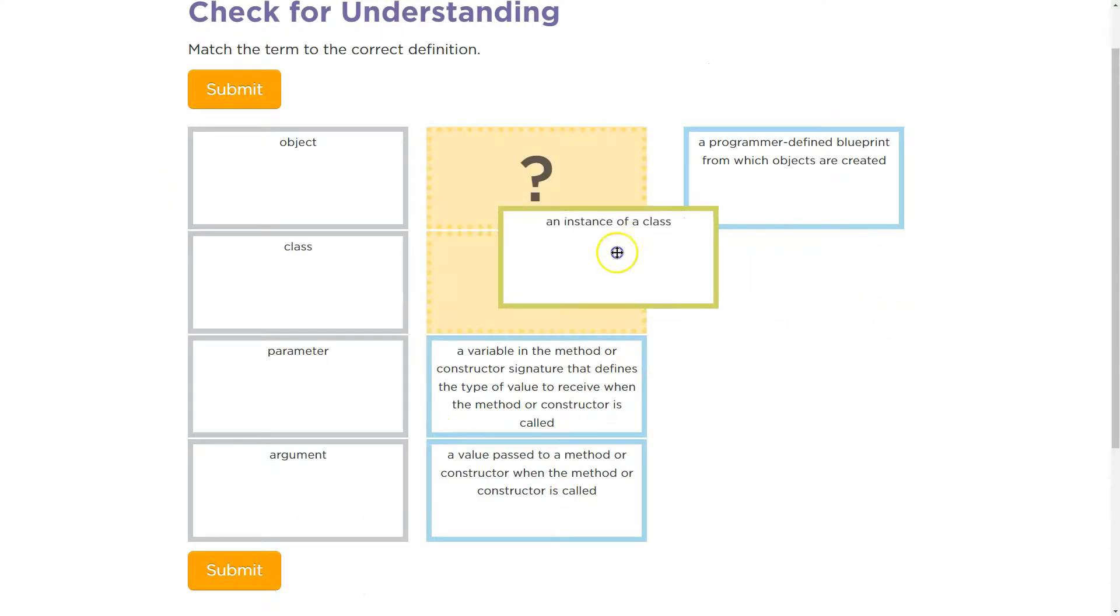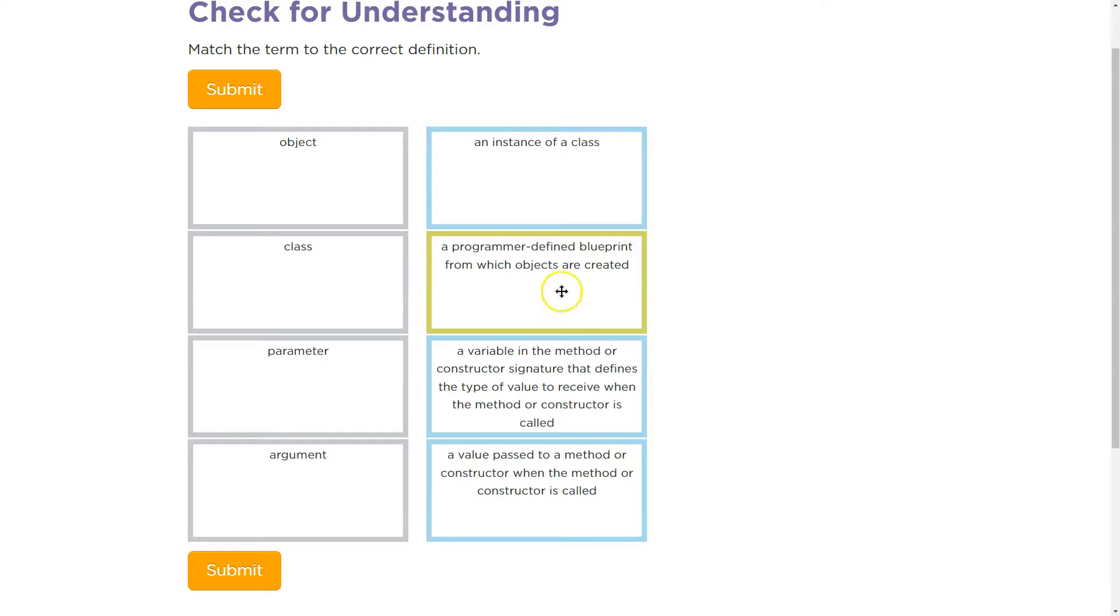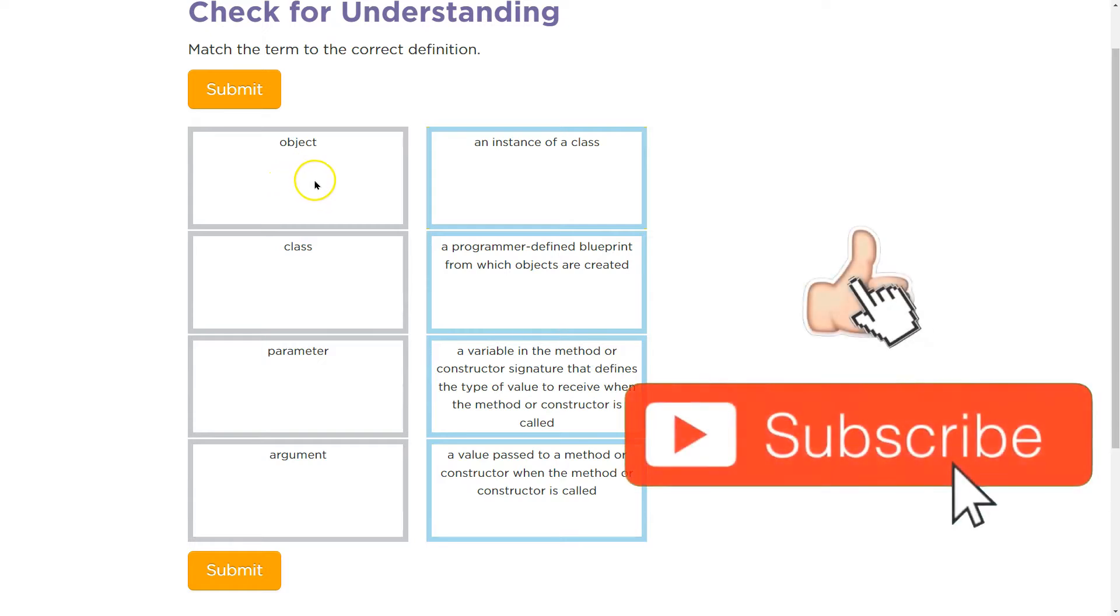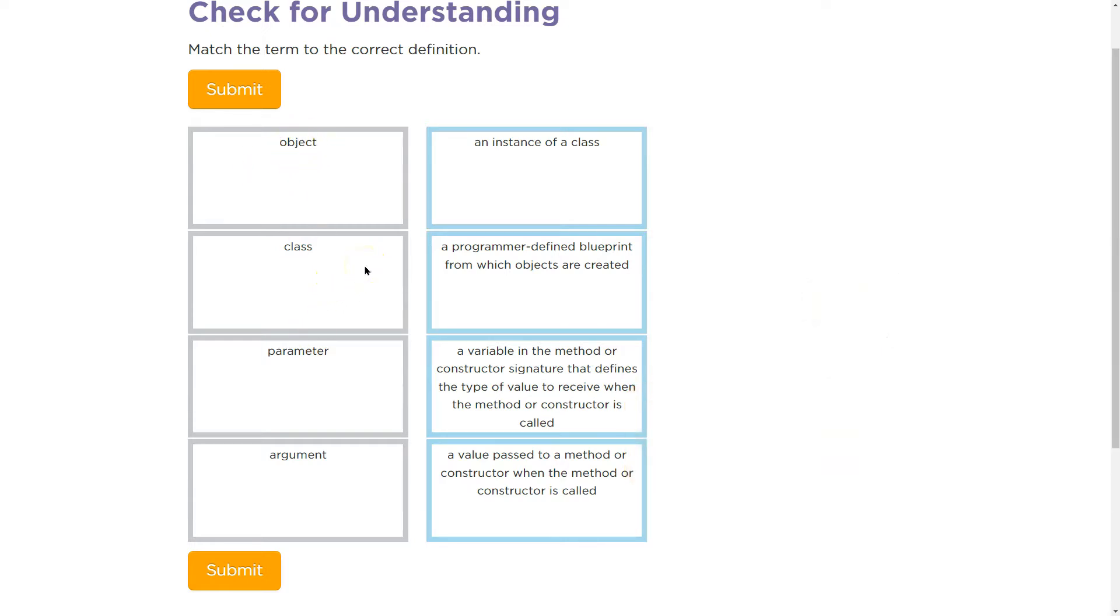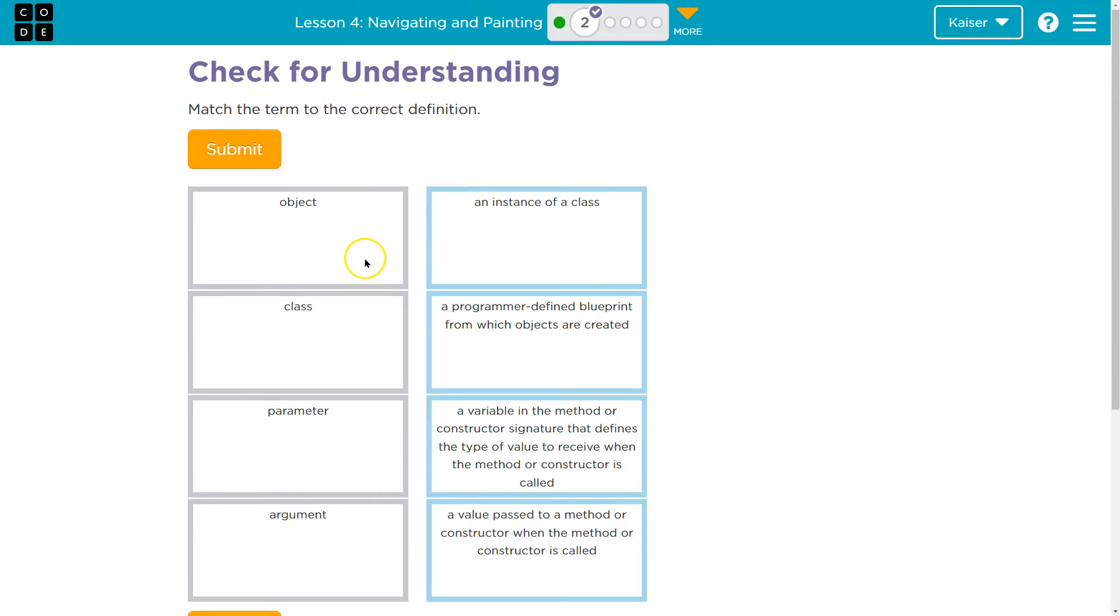Cool. So, object's an instance of a class, and the class is how we make our objects. So, when we do painter, my painter equals new painter, that's the object. The class that is being used to create that object is the painter class. Make sure to use your resources, and let's keep going. Onward.